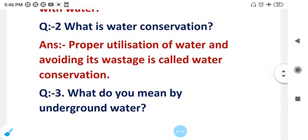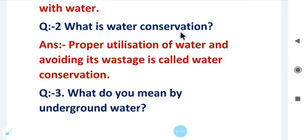Now second question is: What is water conservation? Answer is: Proper utilization of water and avoiding its wastage is called water conservation. Proper utilization means water ka sahi istemal karna aur water ki wastage ko avoid karna, that is called water conservation.